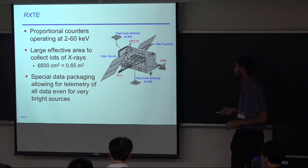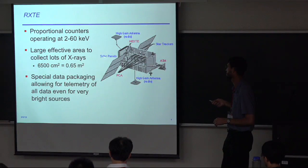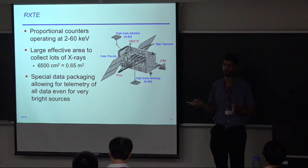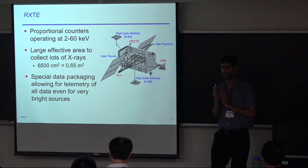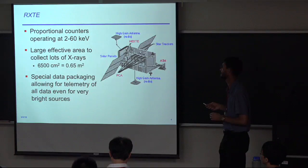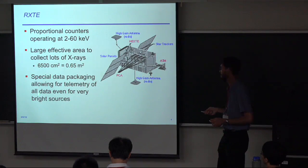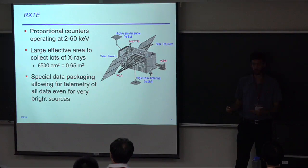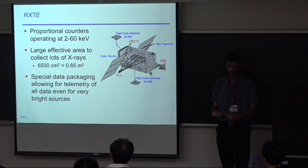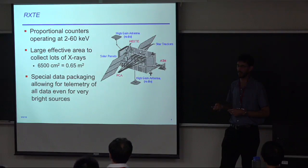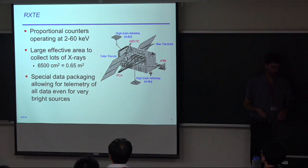Then RXTE launched and we got a lot of new information about timing of black hole systems. These are proportional counters operating at 3 to 60 keV with a very large effective area of about 0.65 square meters. You need a lot of counts for great timing measurements — effective area is the number one thing, plus time resolution. There was one instrument called the EDS especially on RXTE for repackaging the data to make it possible to send it all to the ground at high count rates for analysis.